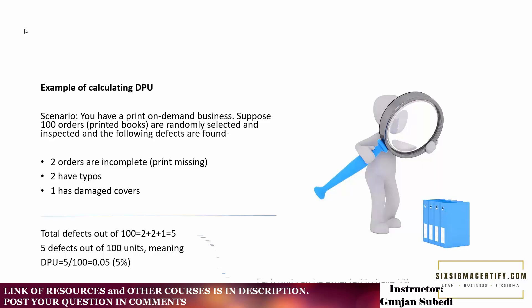The DPU, defects per unit, is 5 divided by 100, which gives us 0.05. That means each unit can be expected to have five percent defects, which is the probability of defects.